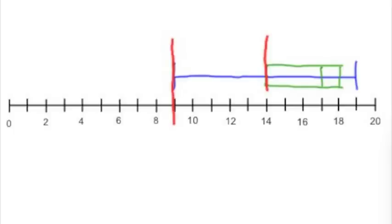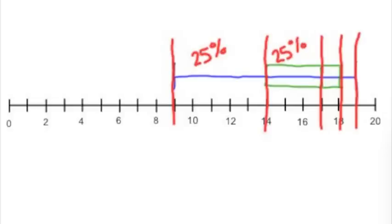Looking at the box and whisker plot, we can see that it is divided into four sections. If we have 100% of something and split it into four equal parts, each part represents 25%. That is the same case here.